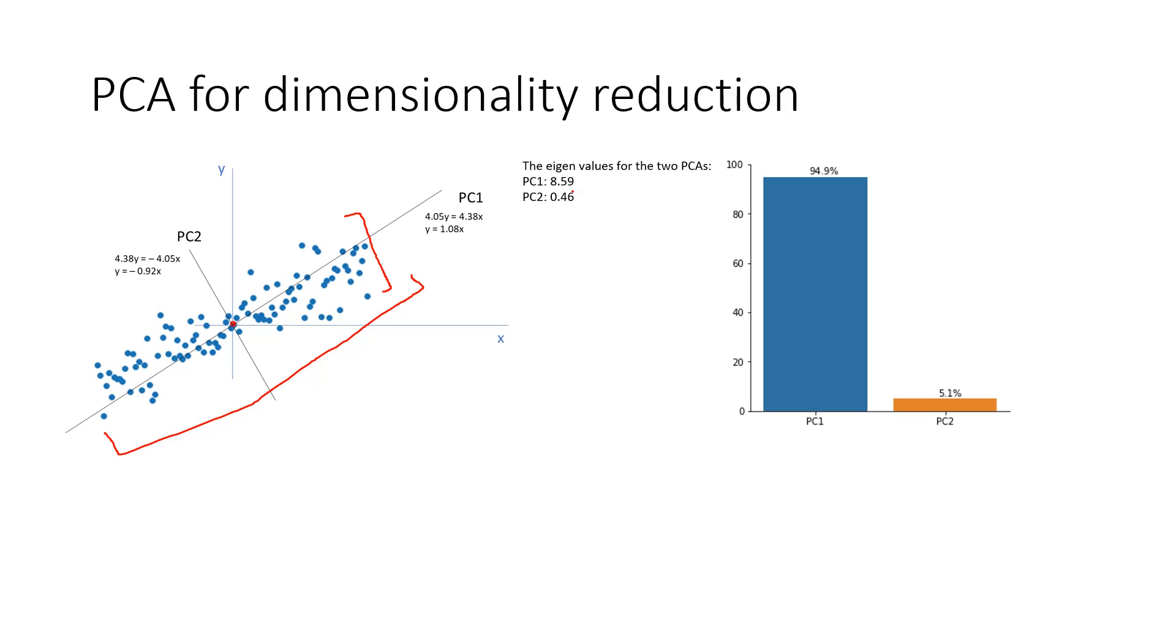Now, if we want to look at the individual contribution of these two eigenvalues, we can just do 8.59 divided by the sum of these two values, which comes out to be 95% almost, and 0.46 divided by the sum of these two values, which is around 5%.